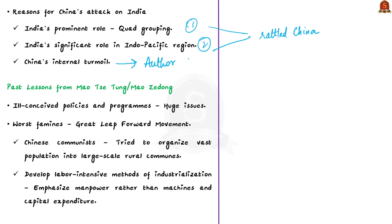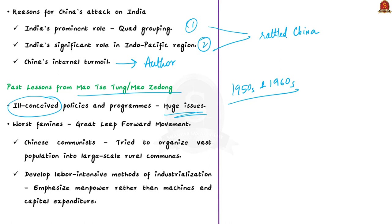The Great Leap Forward was a campaign by Chinese communists between 1958 and the early 1960s, in which the government tried to organize its vast population into large-scale rural communes or cooperatives, hoping to develop labor-intensive industrialization methods — emphasizing manpower over machines and capital expenditure — and thereby bypass the typical slow process of industrialization. The plan failed, affecting Chinese growth and putting millions into famine and poverty. Rather than correcting his mistakes, Mao Zedong attacked India as a diversion tactic.